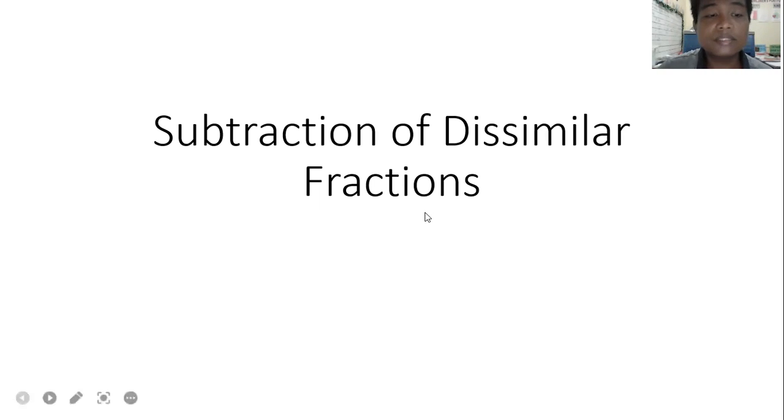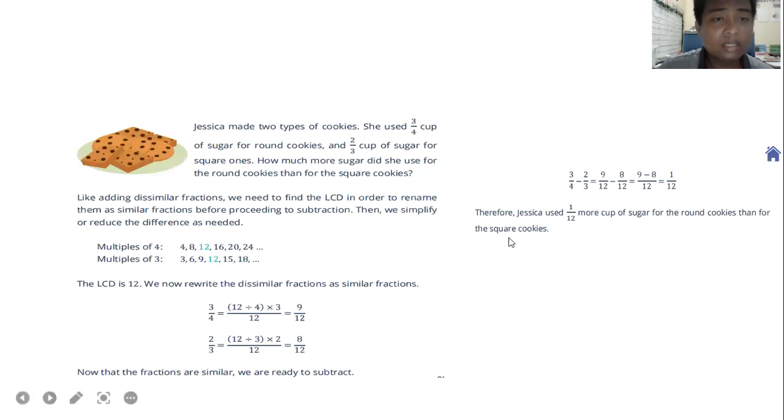Jessica made two types of cookies. She used three-fourths cup of sugar for round cookies and two-thirds cup of sugar for square ones. How much more sugar did she use for the round cookies than for the square cookies? Like adding dissimilar fractions, we need to find the LCD in order to rename them as similar fractions before proceeding to subtraction, then we simplify or reduce the difference as needed.